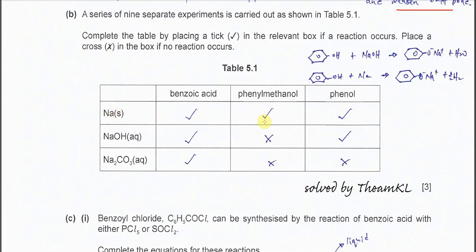For the phenyl methanol, it behaves just like a normal alcohol. Therefore it will react with sodium and form hydrogen gas. But for phenyl methanol, it's not really acidic enough to react with sodium hydroxide, so it will have no reaction. And it's not really acidic enough to react with sodium carbonate. So put a cross here. Phenol is a stronger acid, so it can react with sodium and form sodium phenoxide and hydrogen gas. And phenol can react with the alkaline solution sodium hydroxide to form phenoxide and water. Phenol also cannot react with carbonate, just put a cross here. Only the carboxylic acid can react with carbonate.